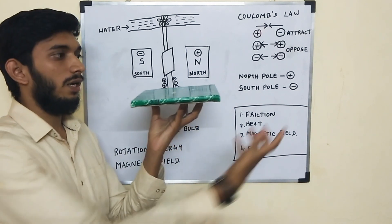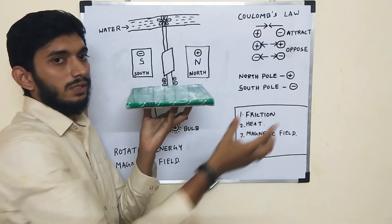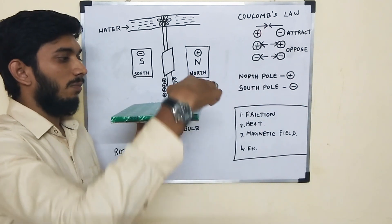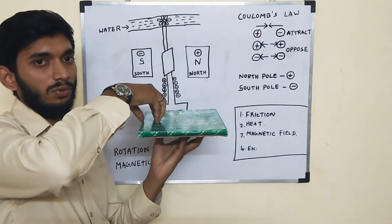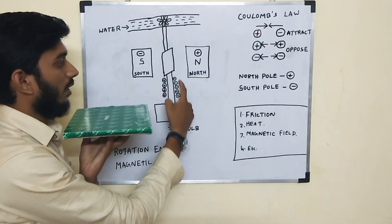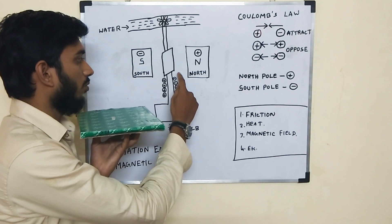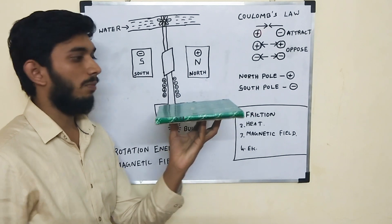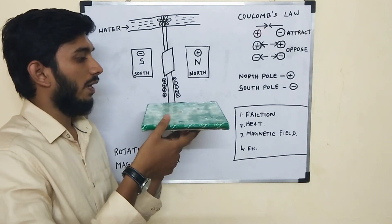Since this pole is positive energy, it will attract the negative energy. So we will accumulate all the negative energy and put the negative energy into a bulb. We will put the negative energy into the bulb, and then again we will need rotation energy.